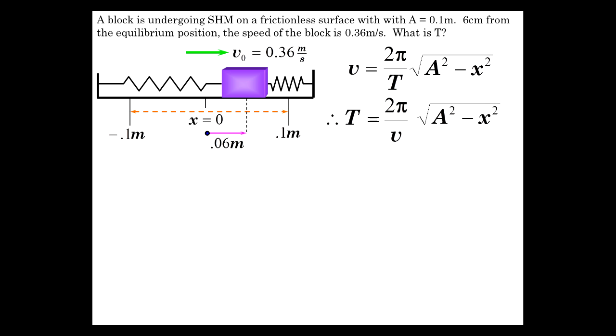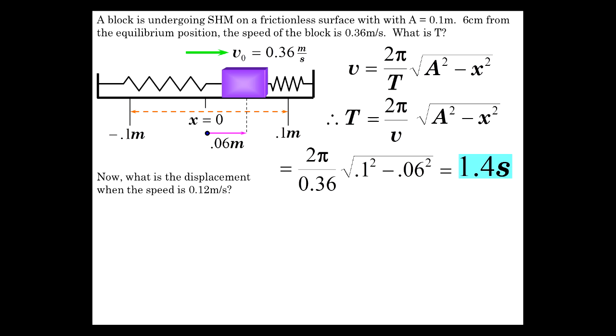And so we're going to solve for T. So just do the algebra, 2 pi over v squared of A squared minus x squared. And let's plug some numbers in. We got v, 0.36 at that position, A is 0.1 squared. Subtract 0.06 squared. Take the square root. And out pops 1.4 seconds.